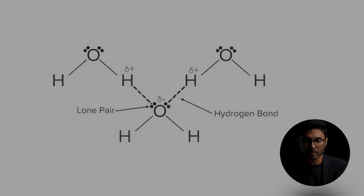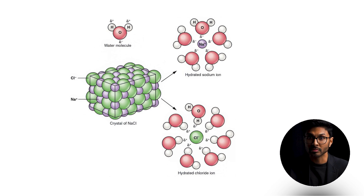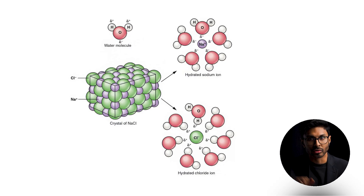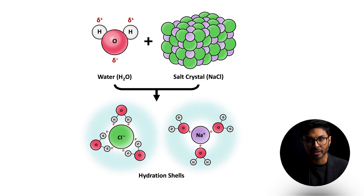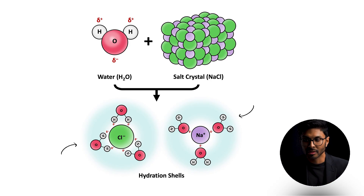Polar substances — ones that carry slight positive and negative charges like water, or ones that carry full charges — tend to dissolve in water because they can interact with water's oxygen-hydrogen dipole. For example, water molecules interact with other water molecules because each slight charge sticks to the opposite slight charge. Sodium chloride, or table salt, also interacts with water because its full charge interacts with the opposite slight charge in the water molecules. When you drop a polar substance into water, water molecules surround it and form stabilizing interactions through hydrogen bonds and charge-to-charge interactions.